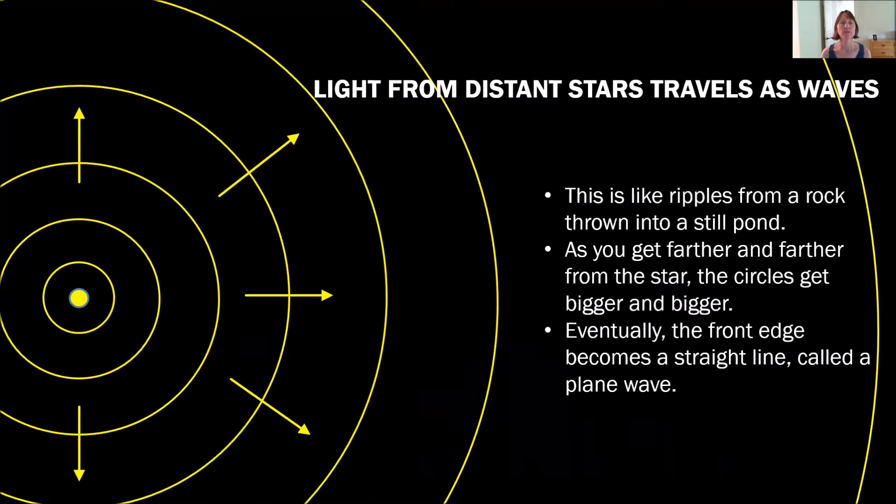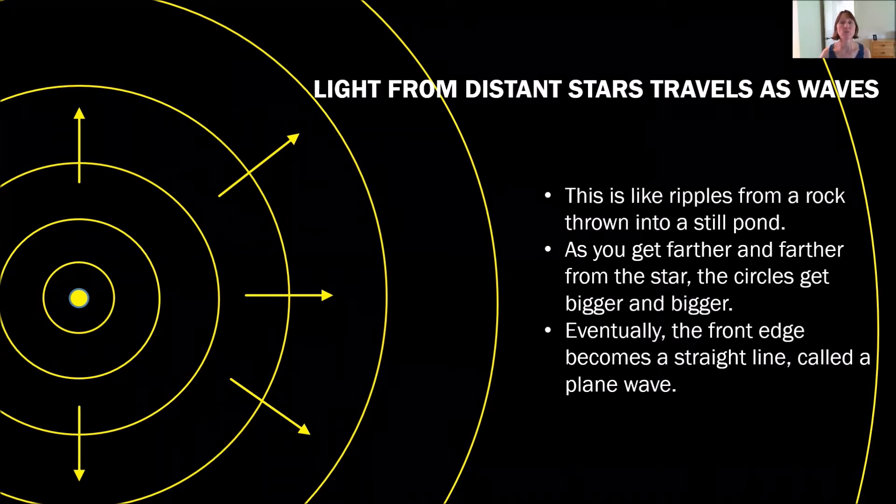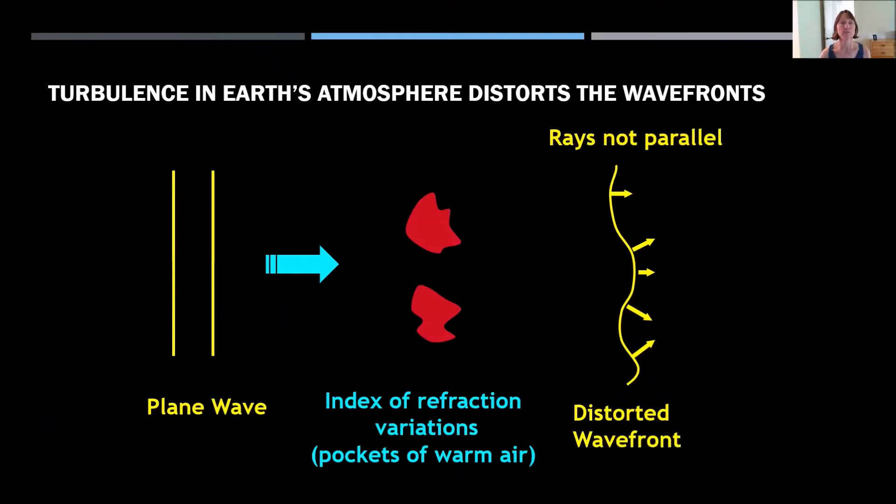So light travels from distant stars in waves, the same that a rock thrown into a pond will make a ripple or a wave. And these waves can be shown as either the waves like a ripple or light rays that show which direction the waves are going. Now, as you get further and further from the star, these waves get larger and larger so that by the time they reach Earth, they look like they're straight lines. So you have these perfectly straight lines called plane waves that have been traveling through the universe for hundreds of millions of light years with perfect clarity. And then in the last few nanoseconds of travel, they hit the turbulence in the Earth's atmosphere and they become distorted and the light rays are no longer parallel.